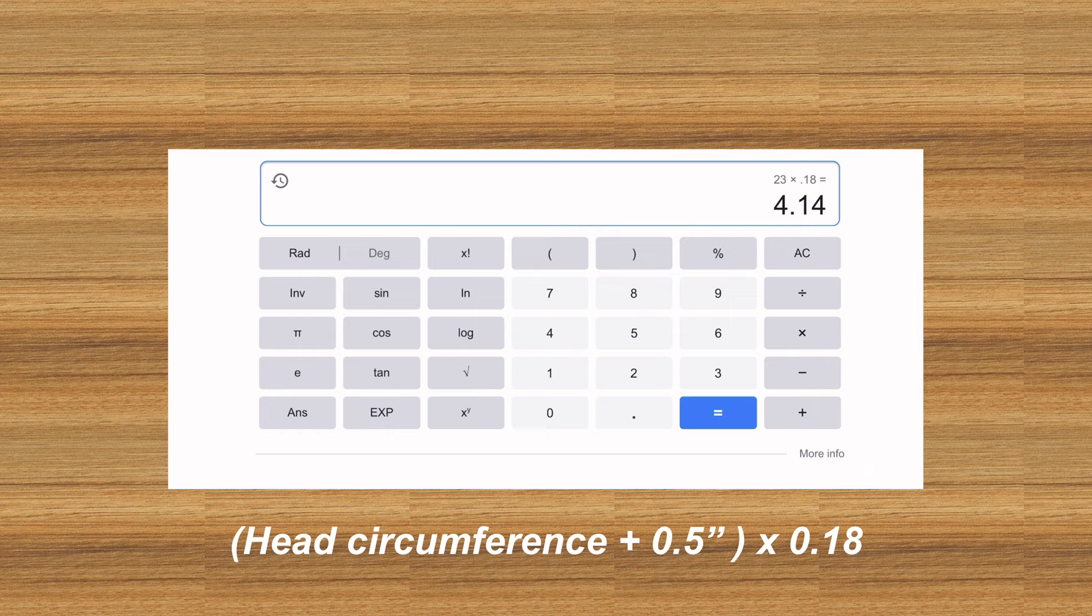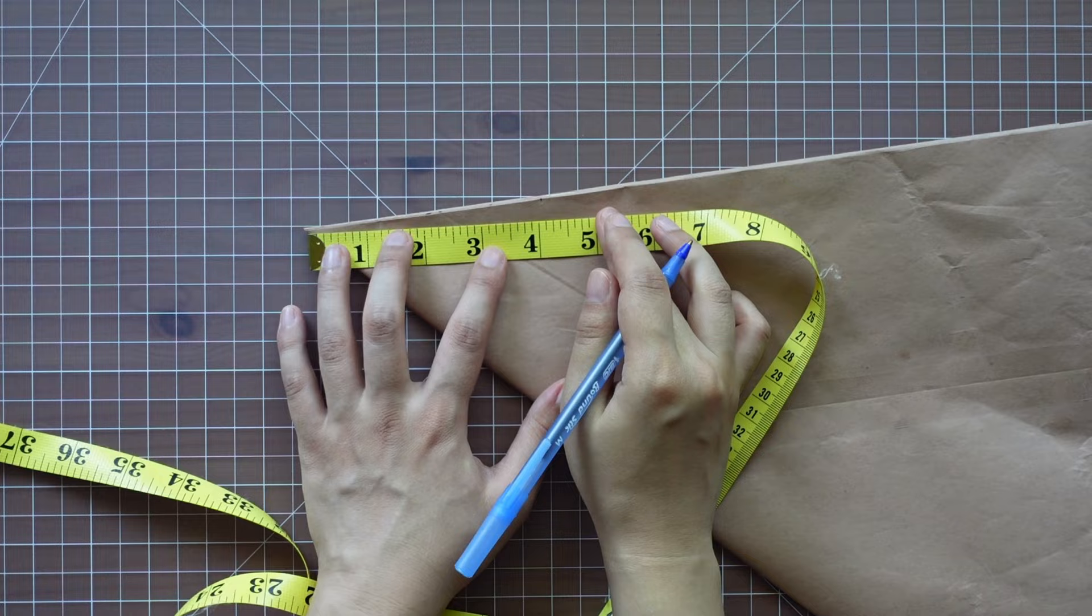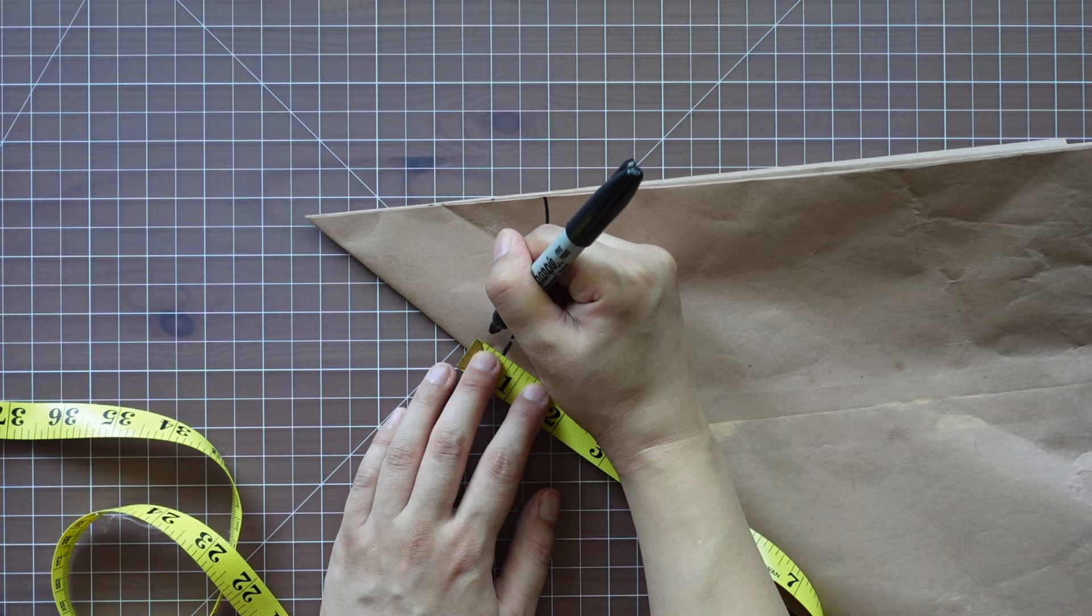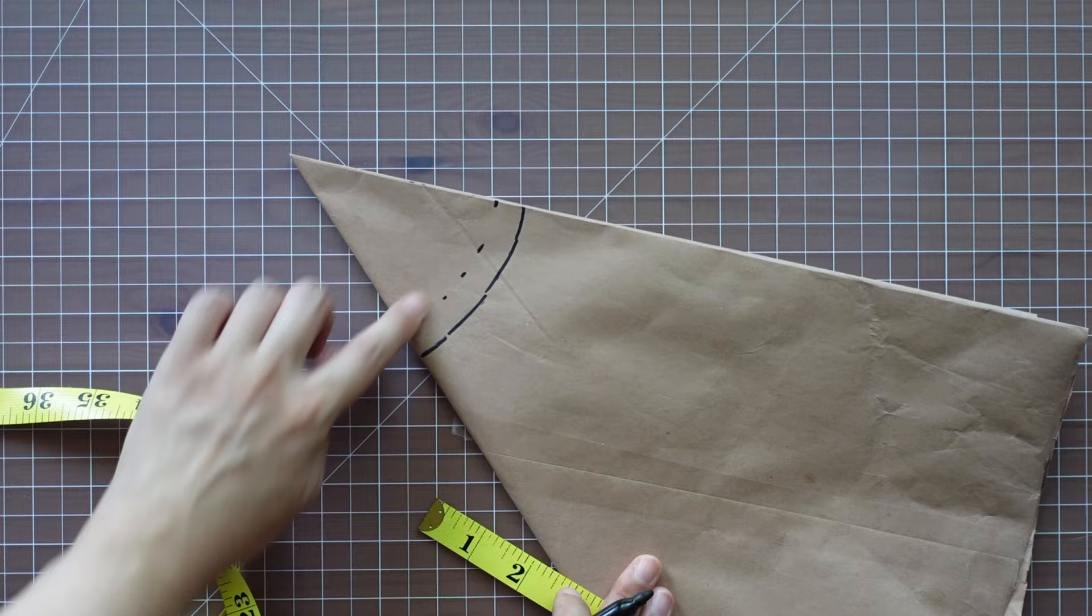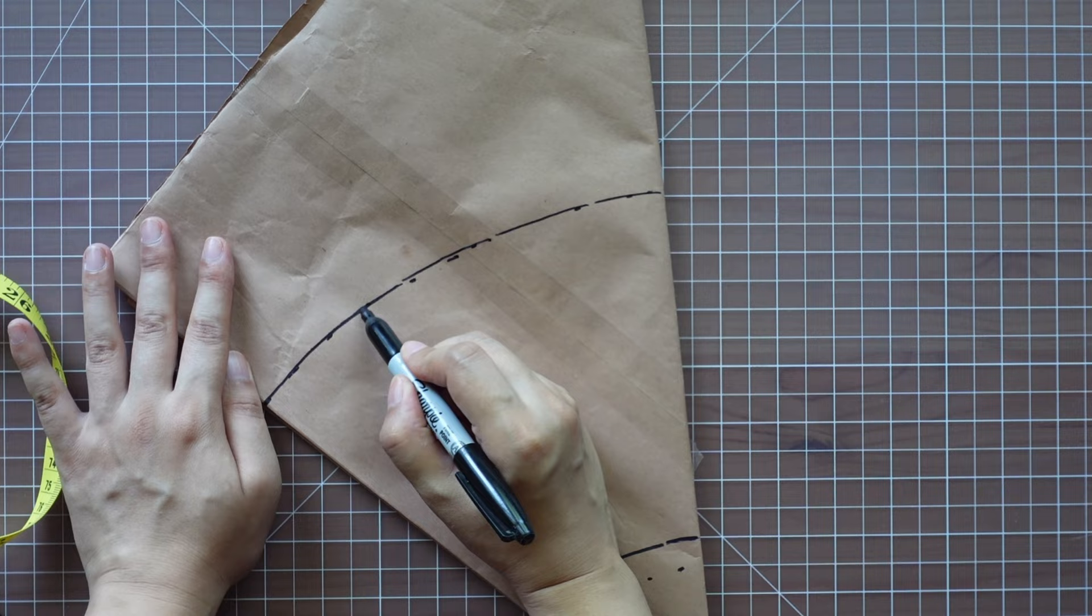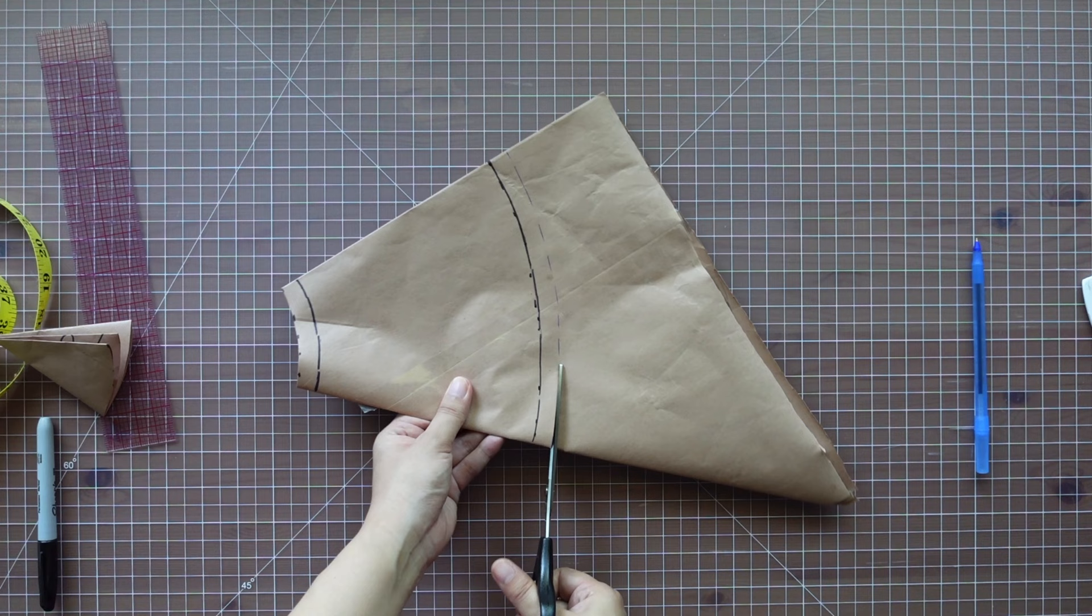Measure that amount from the tip of your folded piece. Then add half inch seam allowance. From the first curved line, measure six inches for the brim. This can be any number you like. Then add half inch seam allowance to the outer edge.